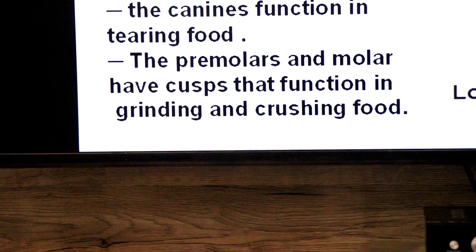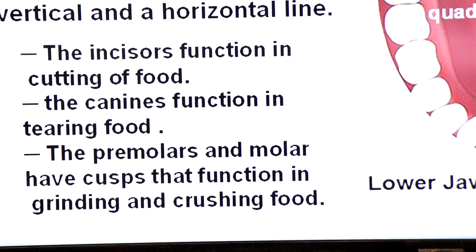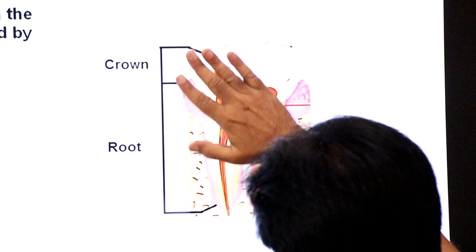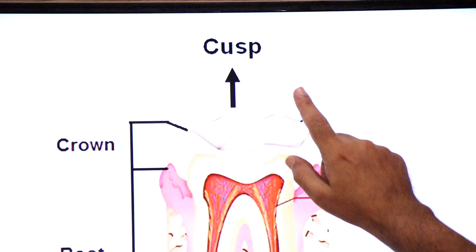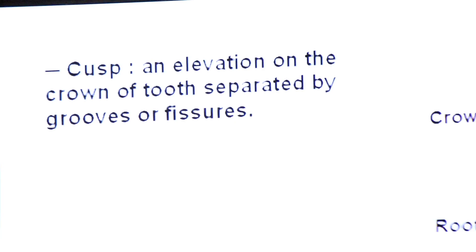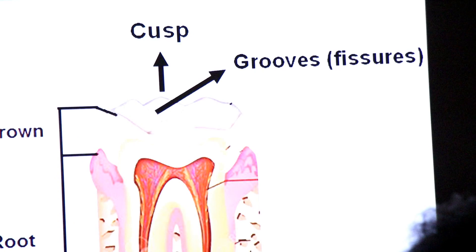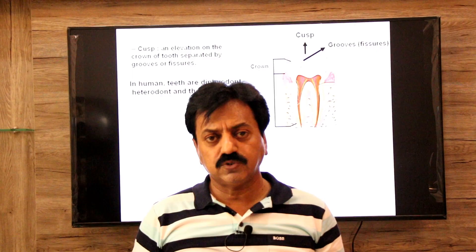Now, what are the functions of these teeth? Incisors function in cutting of food. Canines are pointed and help in tearing of food. Premolars and molars have cusps that function in grinding and crushing of food. A cusp is an elevation on the crown of the tooth separated by grooves or fissures. The crown is the upper part of the tooth and the root is the lower part; the elevated pointed structures on the crown are called cusps.